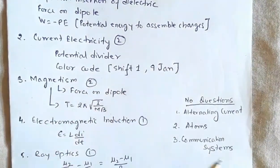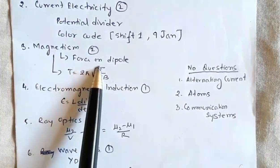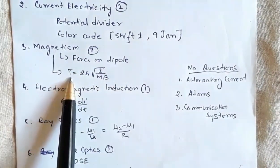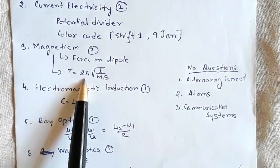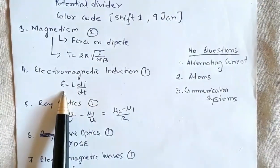In the topic magnetism there were two questions: one from force on dipole, one on oscillation of dipole in magnetic field. Then there was a question on electromagnetic induction from the relation E = L di/dt.